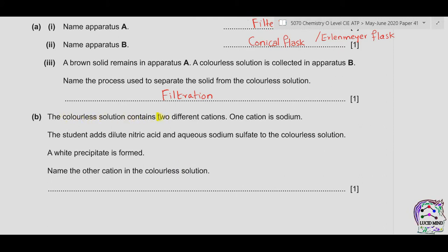Part B. The colorless solution contains two different cations; one cation is sodium. The student adds dilute nitric acid and aqueous sodium sulfate to the colorless solution and a white precipitate is formed. Sodium does not form any precipitate because all sodium salts are soluble. The other cation present gives a white precipitate with sulfate — it could be barium, because barium in the presence of nitric acid and aqueous sodium sulfate forms a white precipitate of barium sulfate, which is insoluble. So the other cation is barium.